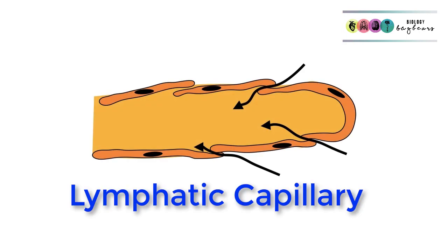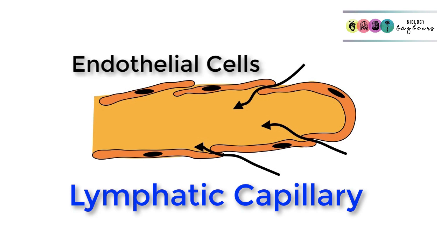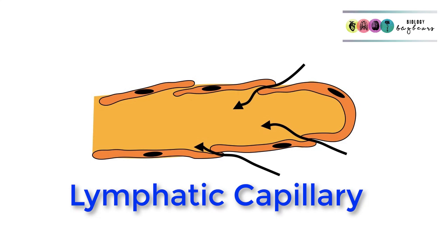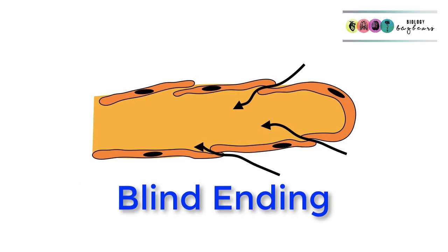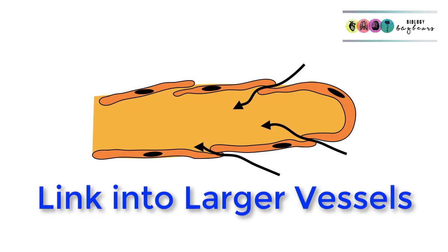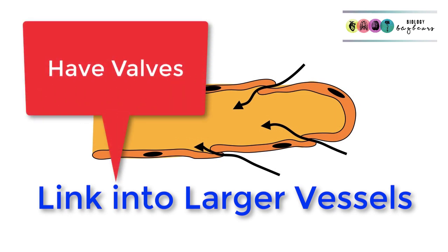This is a diagram of a lymphatic capillary. It's made up of single layers of endothelial cells arranged in a way that they act as valves. They have wider gaps so larger molecules can fit through into the vessel, but once they're in, they stay in. Lymphatic capillaries are also blind-ending — they're dead-ending. These lymphatic capillaries lead into larger vessels, and the larger lymphatic vessels have valves, making them similar to veins.